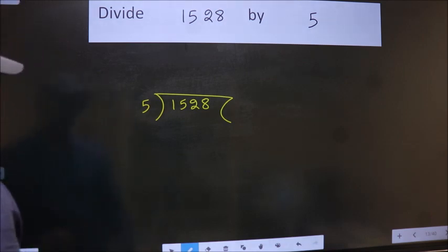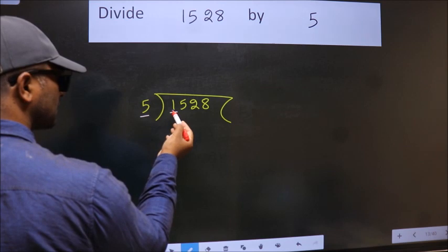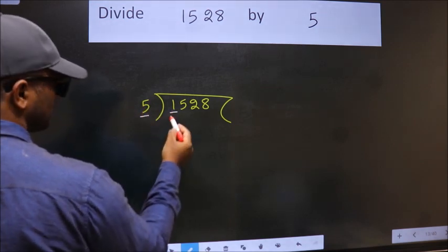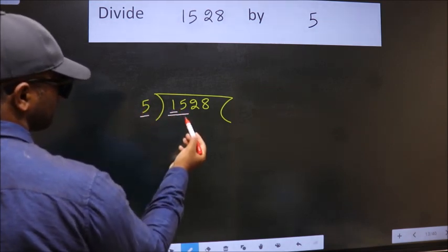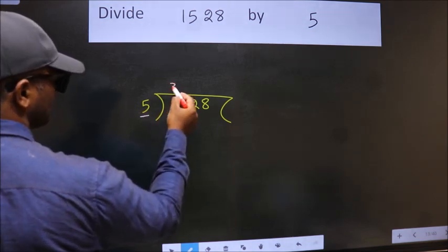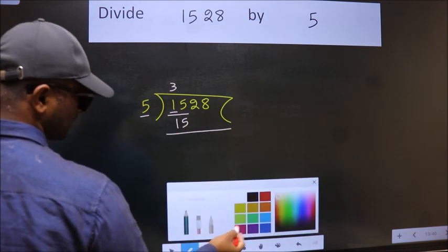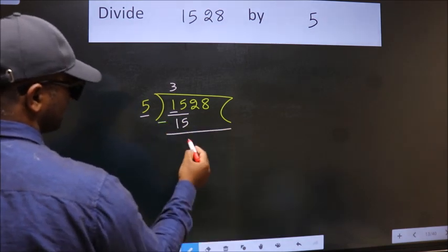This is step 1. Here we have 1, here 5. 1 is smaller than 5, so we should take two numbers: 15. When do we get 15 in the 5 table? 5 times 3 is 15. Now we subtract and get 0.